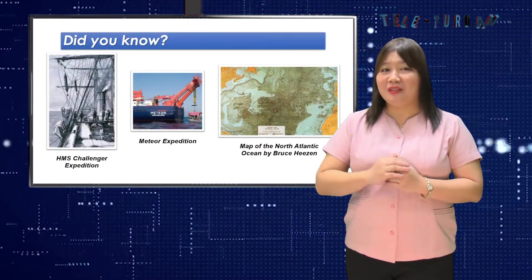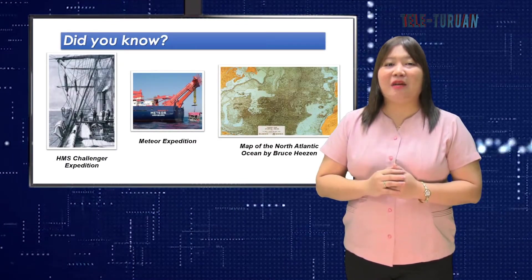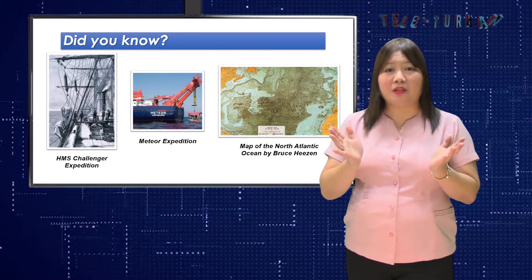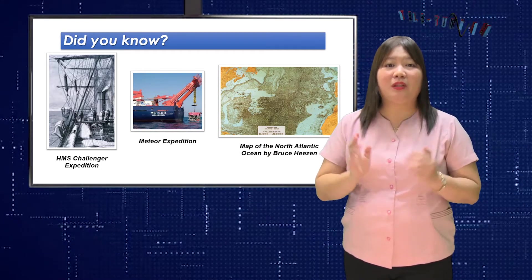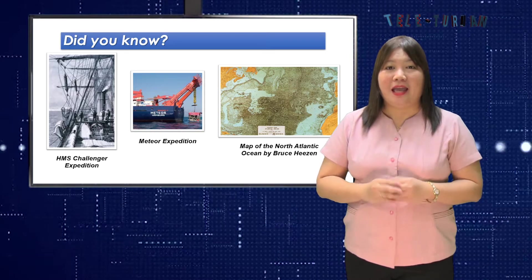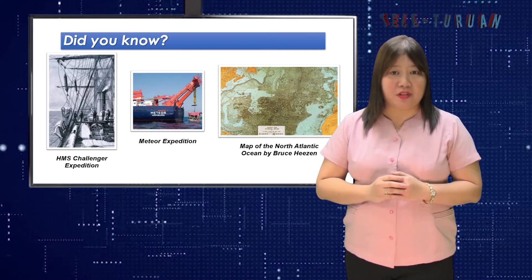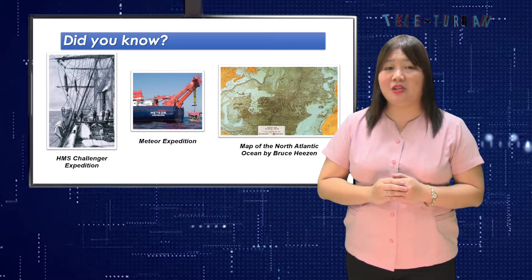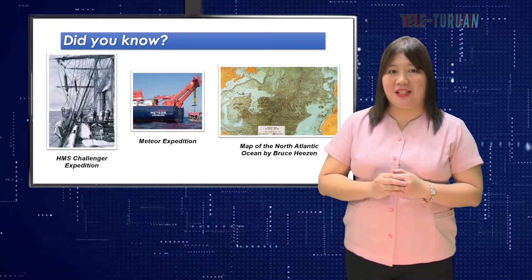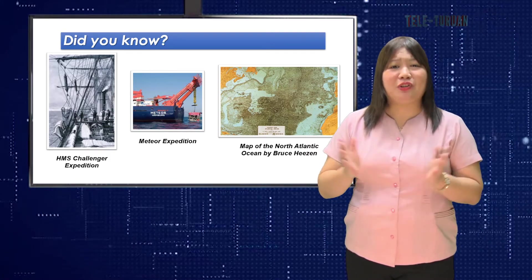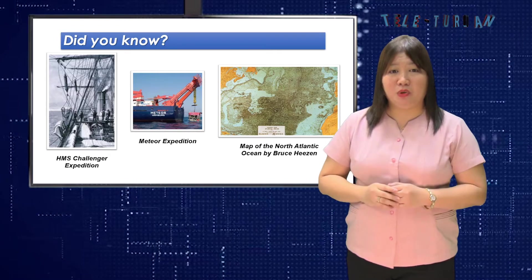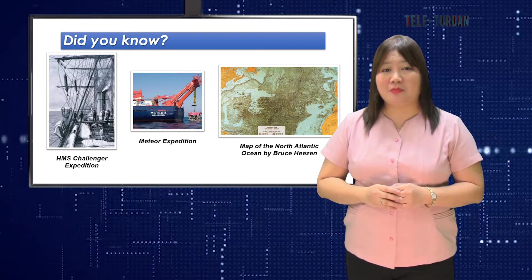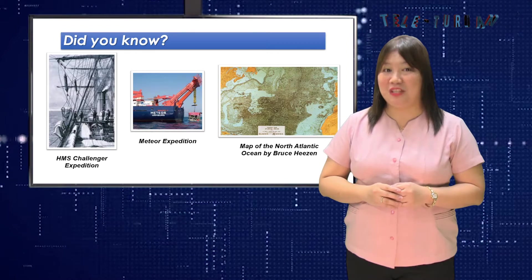Did you know? The HMS Challenger Expedition made the first attempt to measure the water depth with winches and cables, and the Meteor Expedition was the first to measure water depth with acoustic methods using echo sounding. The first public map of the North Atlantic Ocean Basin was published by Bruce Heezen in 1959.